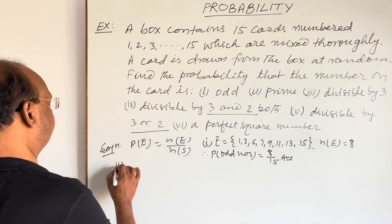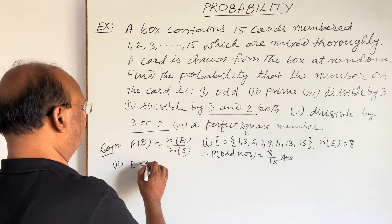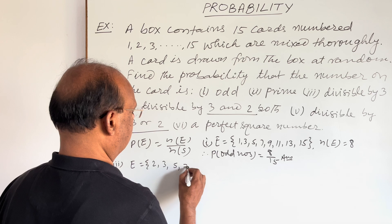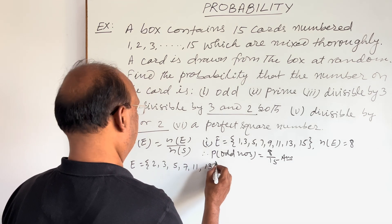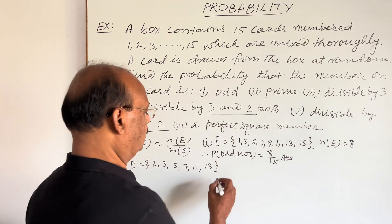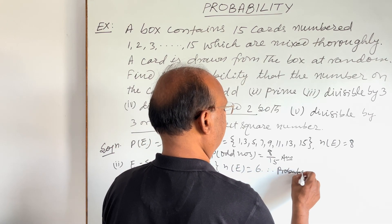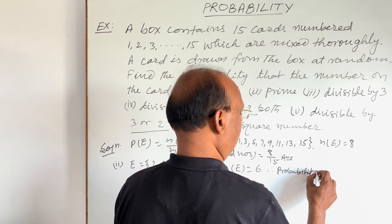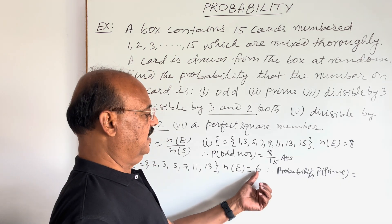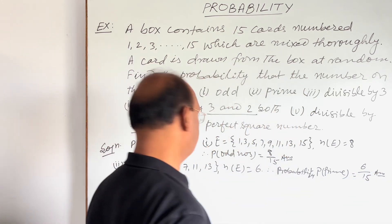Now let us see second part of this question. When numbers are prime numbers, let us collect prime numbers that will make an event. So prime numbers start with 2, so 2, 3, 5, 7, then 11 and 13. Total number of prime numbers between 1 and 15 are 1, 2, 3, 4, 5, 6. So we are getting here n(E) is equal to 6. Therefore, probability P of prime numbers will be n(E) by n(S). n(E) is 6 and n(S) is total numbers 15. So this is the answer of the second part.